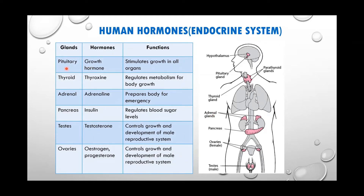The pituitary gland secretes growth hormones, which stimulate growth in the organs. The thyroid gland, present in the throat, secretes thyroxine hormone, which regulates metabolism for body growth — how fast the metabolism rate is, the digestion rate, breaking down food molecules, and how fast they are absorbed in the body. Thyroxine hormone helps regulate metabolism.